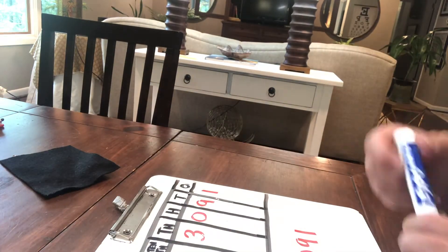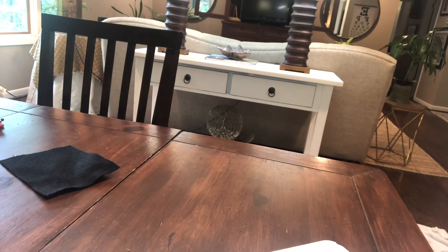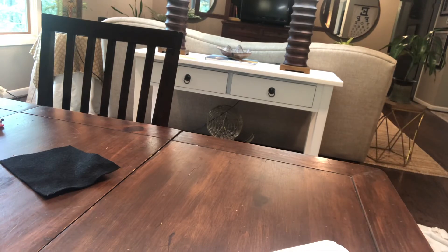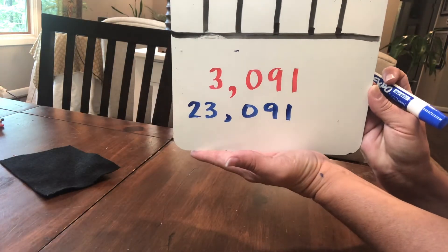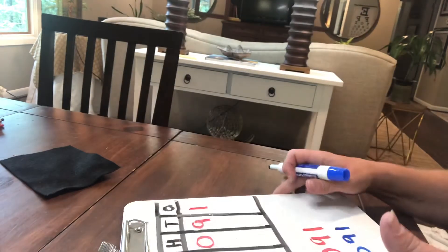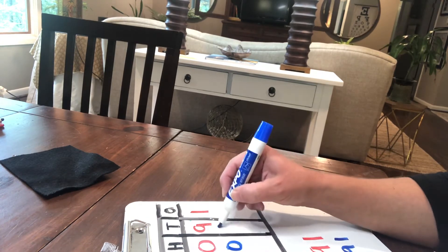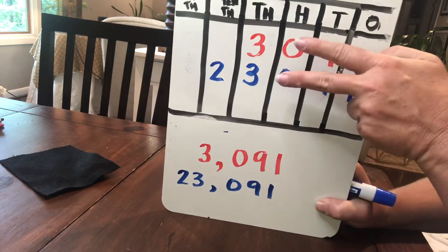We are going to now compare 3,091 and 23,091. Can you write that number? Do you know how to write that number? 23,091. Does it look like that? If you did, then you've got a pretty good understanding of what's going on. I'm going to put it in my place value chart now because I really want to look and analyze this closely. Now I've got two numbers and I can compare.